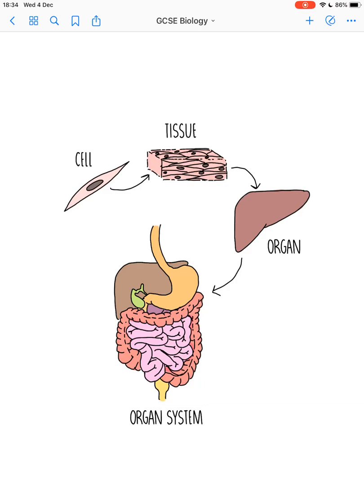A lot of cells working together to carry out the same function is called a tissue, and a group of tissues working together is called an organ. Here I've drawn the example of the liver, but other organs include the heart, the lungs, the brain. And if we're talking about plants, we could talk about the leaves and the roots. A group of organs working together is called an organ system — so the liver is part of the digestive system, but other organ systems include the respiratory system or the circulatory system.